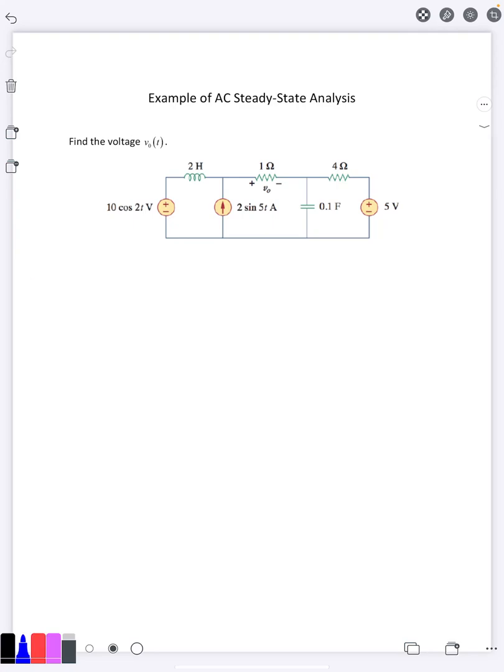So this first one I'm only going to hook up this 10 cosine 2t source. We have our inductor. This source gets removed by becoming an open circuit. We have our resistor, V0, capacitor, and other resistor. This voltage source becomes 0 which means it's a short. For this problem our omega is going to be 2. So we're going to convert everything into phasor versions now. 10 cosine 2t is 10 angle 0 which is just 10.